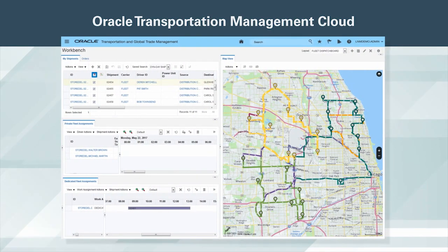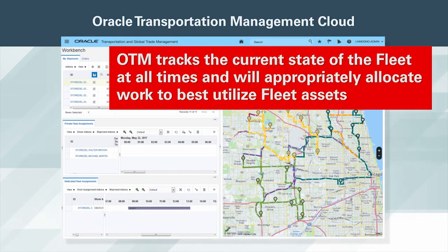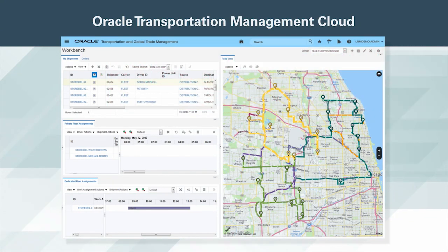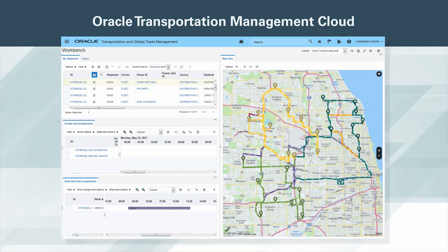Comprehensive fleet management functionality enables you to manage dedicated resources as well as your own private fleet. OTM tracks the current state of the fleet at all times and will appropriately allocate work to best-utilized fleet assets, while simultaneously honoring hours of service restrictions and any other fleet-based constraints. Take the guesswork out of identifying the appropriate mix of private, dedicated, and third-party assets by letting OTM take all available information into account and make the decision intelligently.